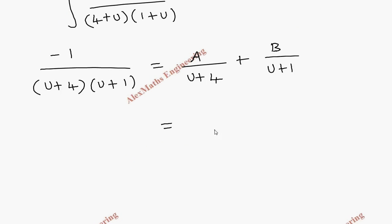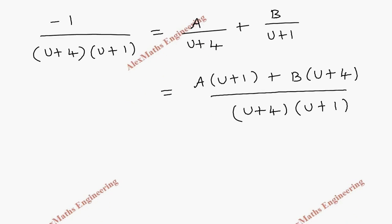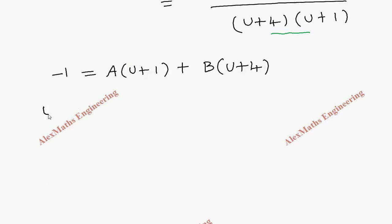Taking LCM as (u + 4)(u + 1), we get: minus 1 = A(u + 1) + B(u + 4). Equating numerators, when u = minus 1, the A term becomes zero, giving minus 1 = 3B, so B = minus 1/3.